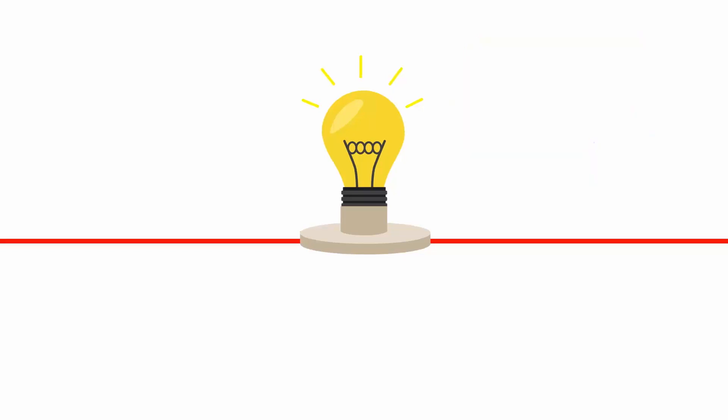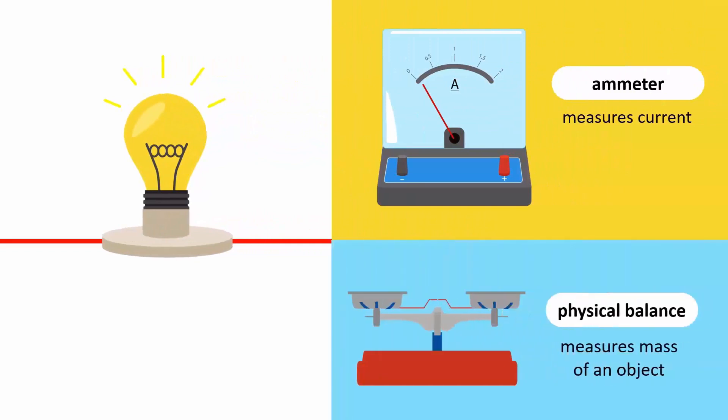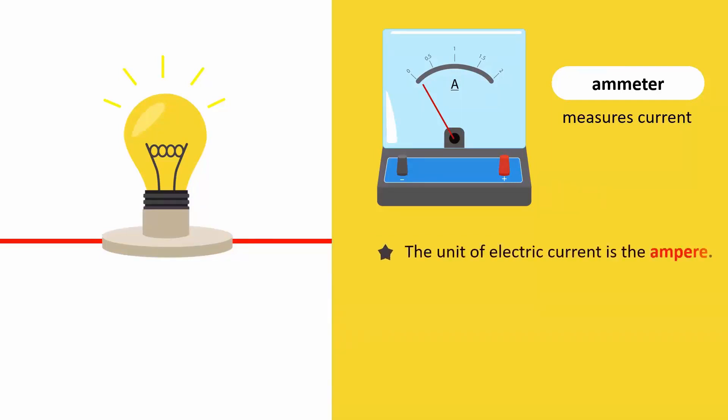To measure the current, we use an instrument called an ammeter just like we use a physical balance to measure the mass of an object. The unit for electric current is called the ampere, denoted by a capital A.